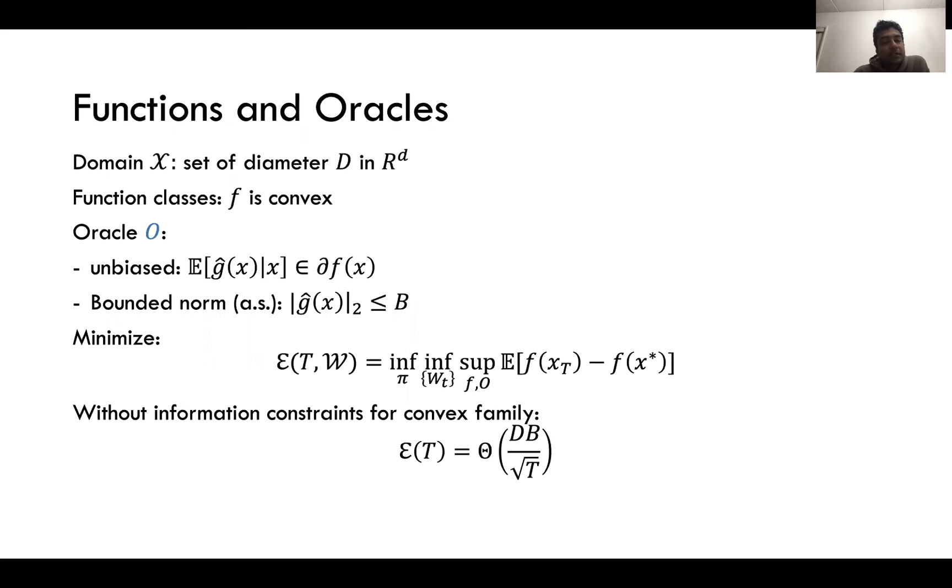The kind of functions we consider are the following. We'll consider functions f which are convex over a domain x of diameter d. The oracles that we consider are unbiased and are bounded norm. The goal is to minimize the excess risk or to minimize the expected value of the function after t iterations with respect to the true minima. Without information constraints it's known that the expected loss is d times b over square root of t expected distance to the minimum.